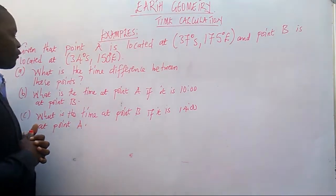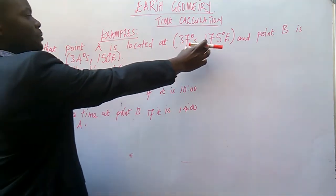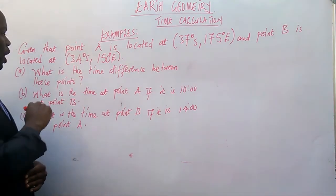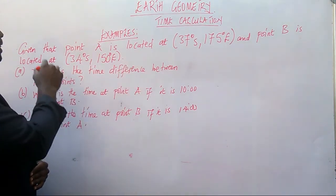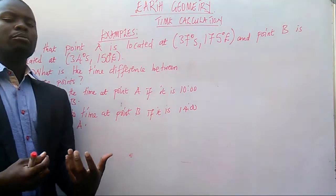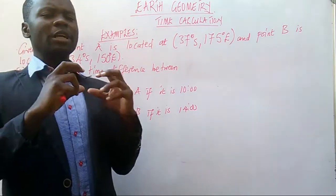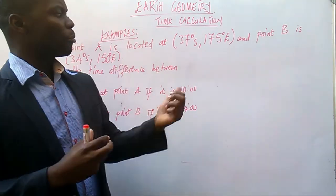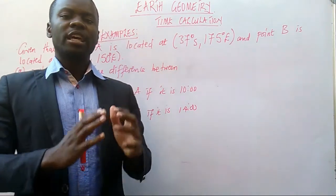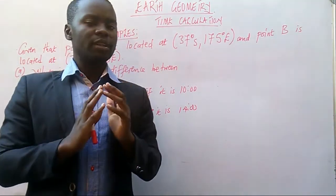In this example, we have got these questions which are saying: given that point A is located at this point and point B is located at this point, question A is asking what is the time difference between these points? So we want to know the time difference between point A and point B. To know the time difference, you must first sketch the location of point A and point B so that you know whether they both lie on the same side of the hemisphere or not.